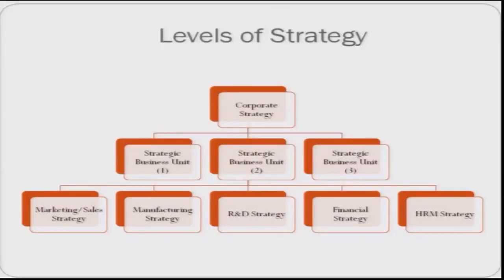Strategy formulation happens at different levels. At the topmost level, we have corporate strategy, where a conglomerate determines the mission, vision, and objectives of the organization and allocates resources to its different businesses. Then you have different SBUs or strategic business units, which operate in different industry sectors and formulate plans to compete in the market. At the functional level, you have strategies like marketing, manufacturing, R&D, financial, and HRM strategy.